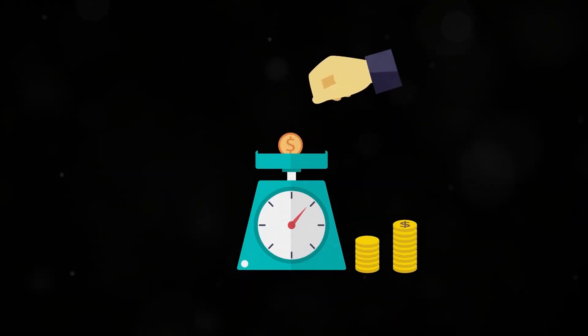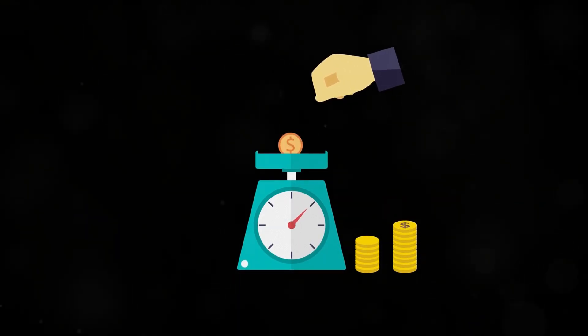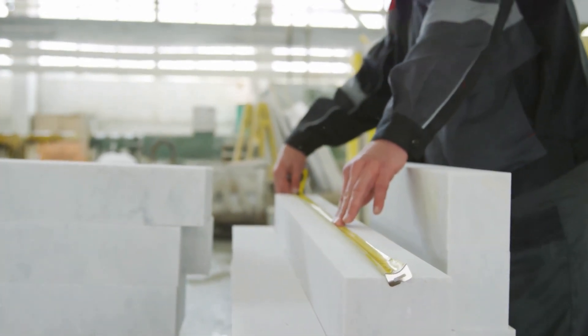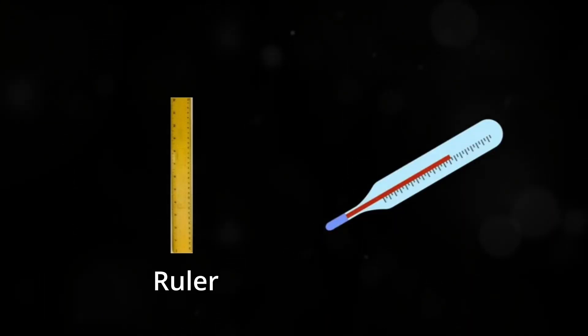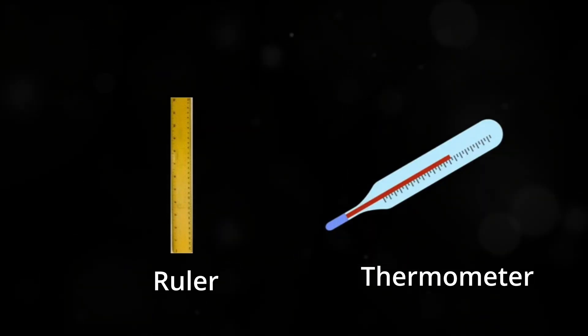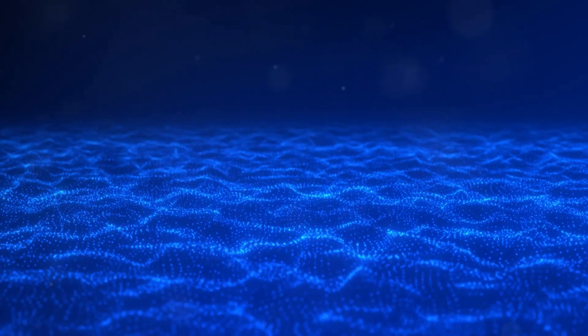In quantum mechanics, measurements aren't like the ones we're used to in our everyday world. In our everyday world, measuring things is usually pretty simple. If you want to know how long something is, you grab a ruler. If you want to know the temperature, you use a thermometer. These measurements typically don't change the things we're measuring.